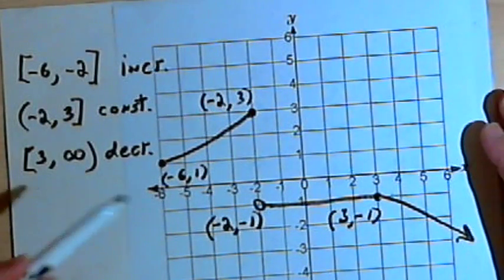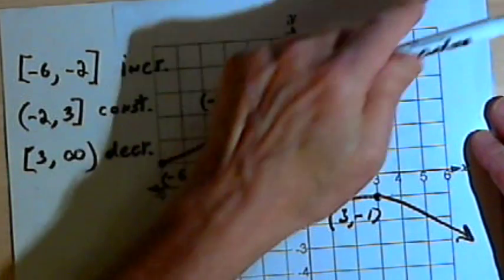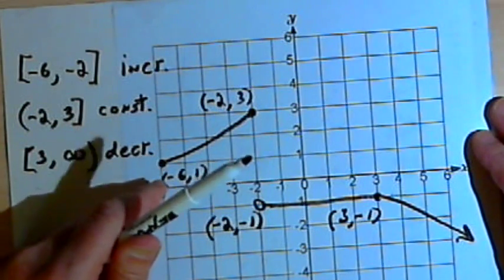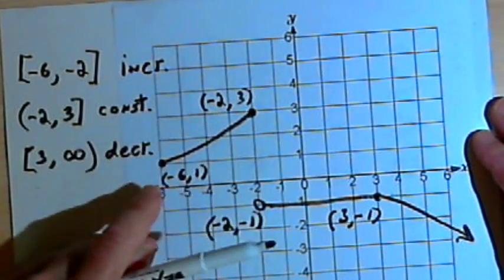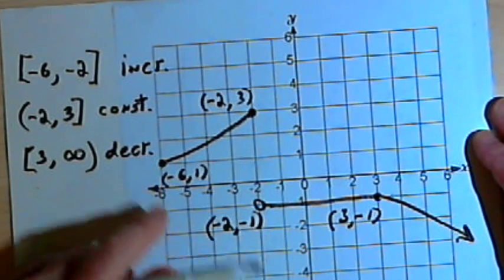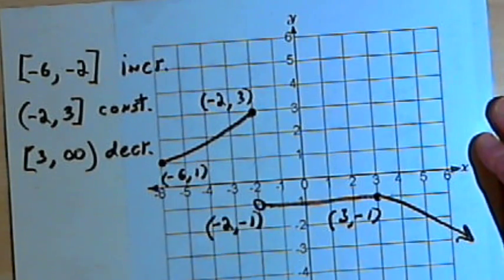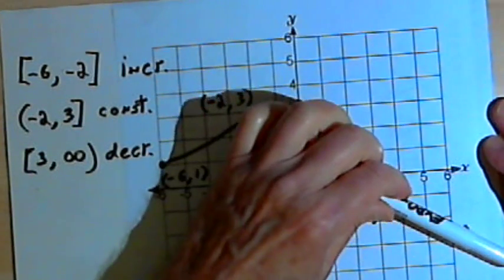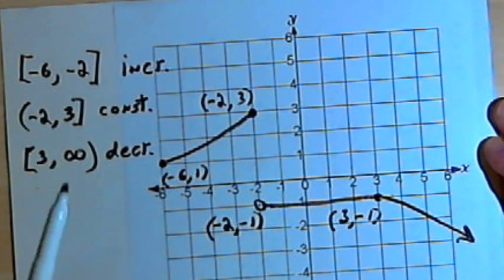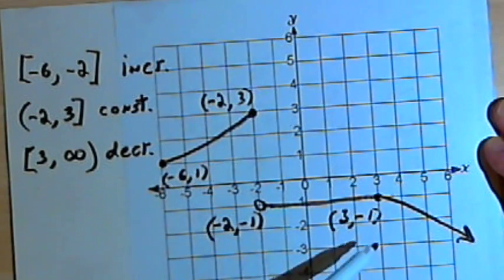So once again, if you're going up from left to right, going uphill in a sense, then you've got an increasing function. If you're constantly at the same level, it's a constant function. If you're going down from left to right, then it's decreasing. You can show the different places where this is happening by using interval notation.